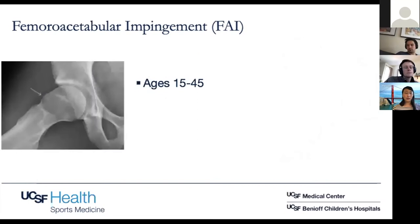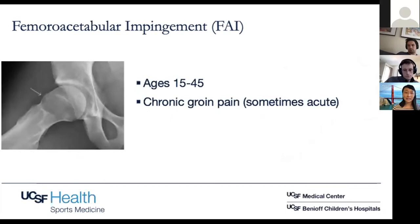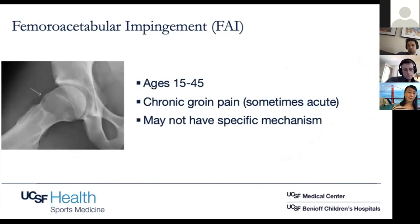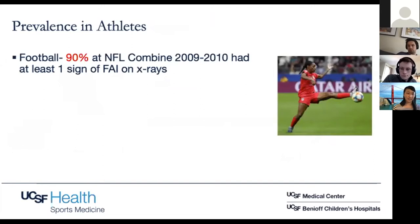FAI is common in patients ages 15 to 45 and typically presents with chronic groin pain. Patients will say they don't really remember a certain mechanism, but that it's been hurting for some months or even years. In terms of prevalence in athletes, there have been a couple of different studies. In football, they looked at NFL combine athletes in 2009 to 2010, and 90% of them had at least one sign of radiographic FAI on their X-rays.